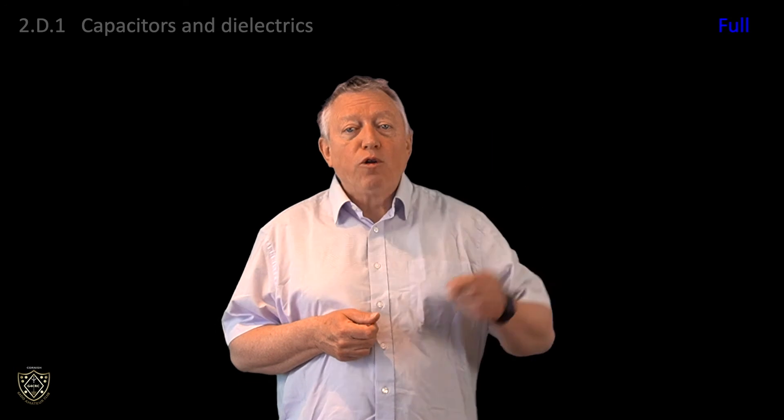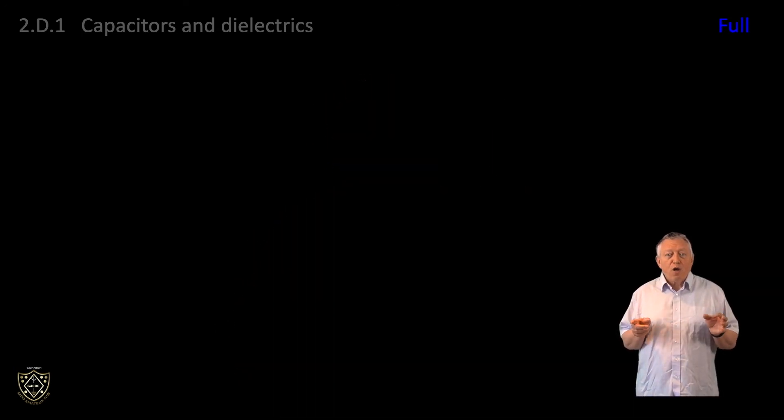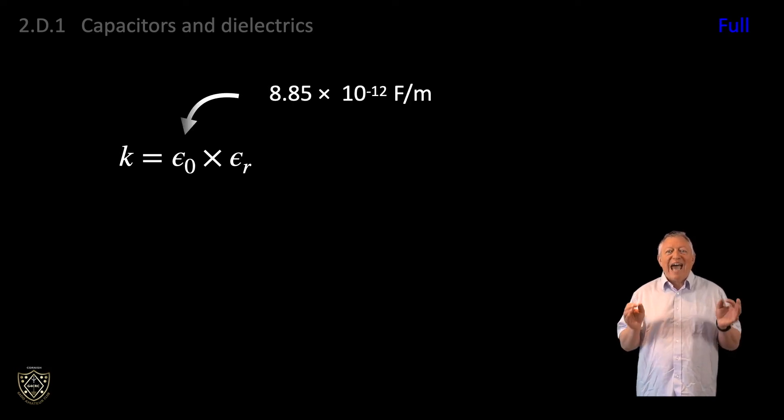Moving on to full license level. For the full license, we need to remember that this multiplication effect is called relative permittivity, epsilon r. That is the permittivity relative to free space. If we multiply the permittivity of free space, epsilon 0, by the relative permittivity, epsilon r, for our dielectric, we get the absolute permittivity, k, for the dielectric we are interested in.